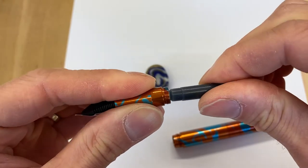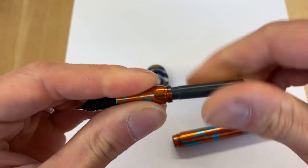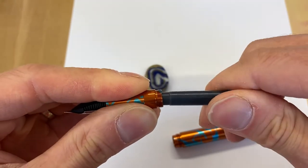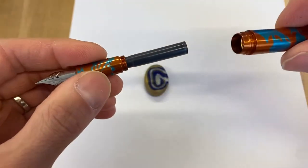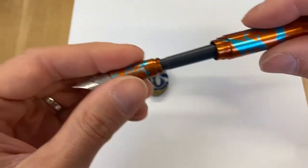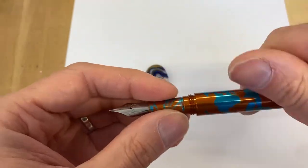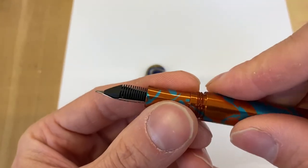So I like to kind of spin on here to make sure I'm kind of centralized and then give it a nice push. I'm going to give it a little bit of a spin after it's installed to make sure that it's seated nicely. So we got our ink cartridge on. Let's go ahead and put the pen back together.